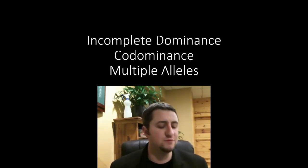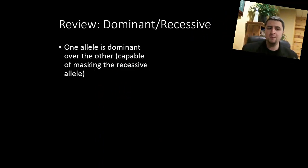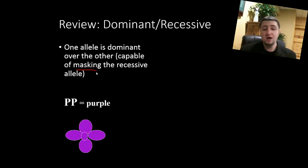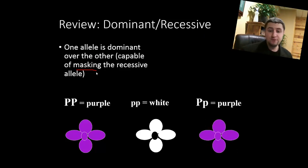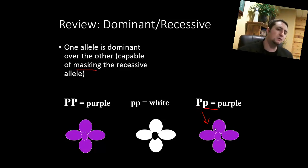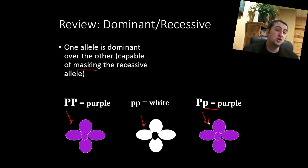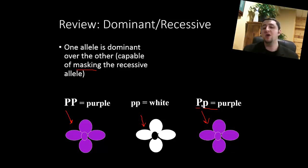Before we get into all that, let's make sure we're comfortable with the idea of being dominant or recessive. Basically, if an allele is dominant, it has the ability to mask or cover up the other allele from showing up. In biology, we often use flowers as examples. We can have purple flowers (big P, big P), white flowers (little p, little p), and also a heterozygote big P, little p — which still ends up being purple. So we know that big P has the ability to mask little p, so we don't end up seeing any white.